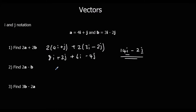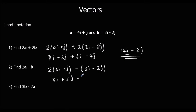2a minus b: so 2 lots of (4i plus j), minus (3i minus 2j), which is 8i plus 2j, minus 3i plus 2j, which gives us 5i plus 4j.